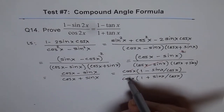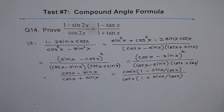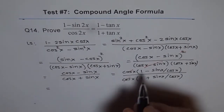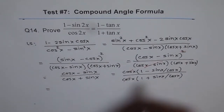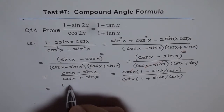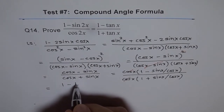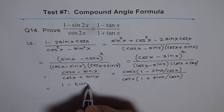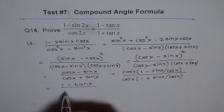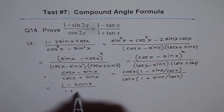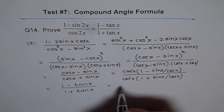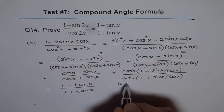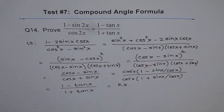The cos x terms cancel out, and we get 1 minus tan x. Since sin x over cos x is tan x, we have 1 minus tan x over 1 plus tan x — which is the same as the right side. That's how we can prove this identity.